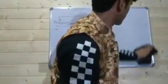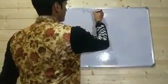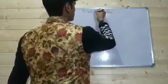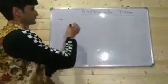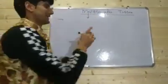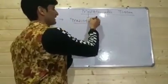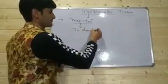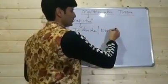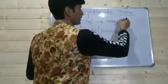Now let's look at meristematic tissue in detail. The term 'meristematic' has come from the Greek word 'meristos.' The term 'meristos' means 'to divide' or 'divisible.' This term 'meristos,' meaning to divide or divisible, was given by Nageli.